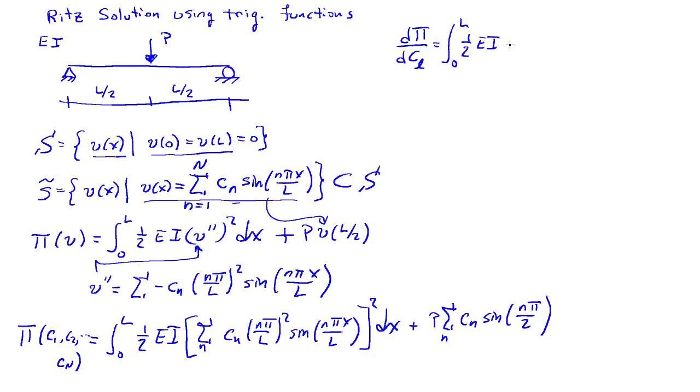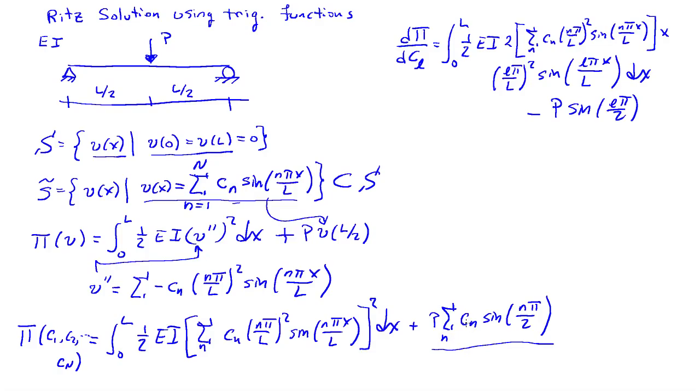so this will be the integral 0 to L of 1 half eI, and now I have to use the chain rule differentiation, so I'll have 2 times the sum over n of Cn n pi over L squared, sine n pi x over L, times the derivative of what's in the square brackets with respect to Cl, and so there's only going to be one Cl appearing, that's when n equals L, so this will be times L pi over L squared, sine of L pi x over L dx, and then we have this other term here, minus P times the sine of L pi over 2. So we only pick out one term from this sum down here, it's when n equals L.